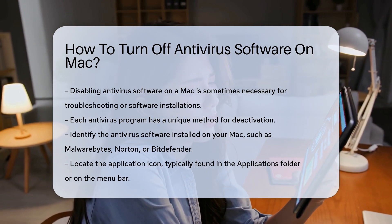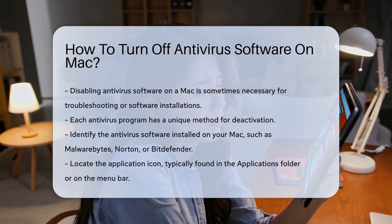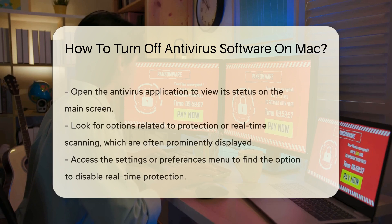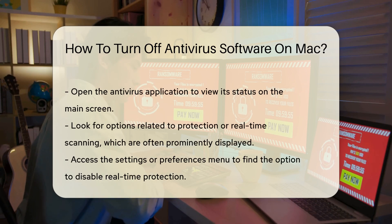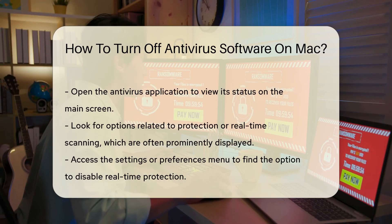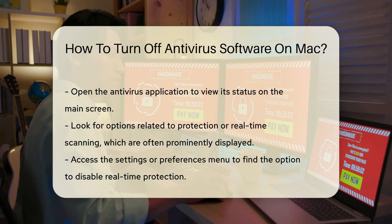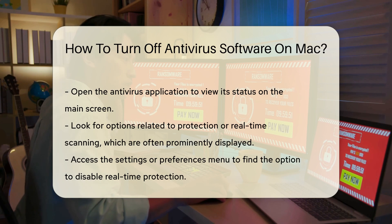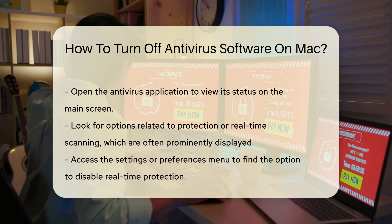Next, open the antivirus application. Most programs display their status on the main screen. Look for options related to protection or real-time scanning. These settings are often prominently displayed.